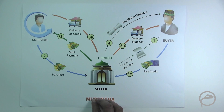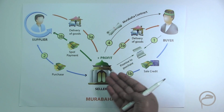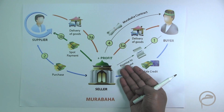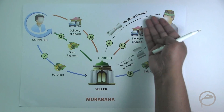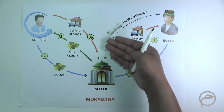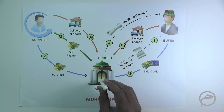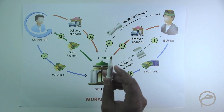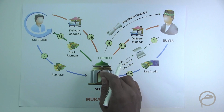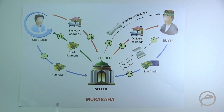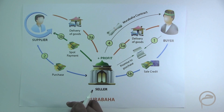The Musawama transaction is also quite similar — the customer approaches the bank, the customer may sign a promise to purchase in favor of the bank, the bank goes and purchases the assets, and then sells the asset through a Musawama contract. The one important point is that in a Musawama contract, the bank is not obligated to tell the customer the amount of profit the bank is making in the transaction. This is the main differentiating feature of Murabaha and Musawama.